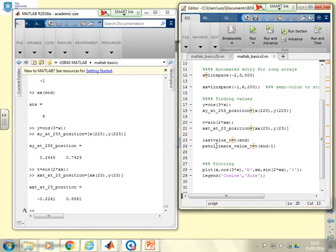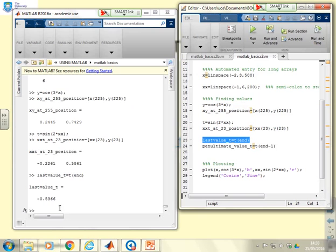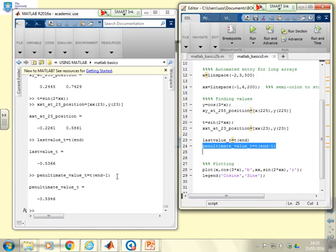If you want to get the last value you can do things like this. Last value of t is t end and there you can see it's minus .5366. If I want the penultimate value, I can use end minus one. So that's quite nice. That end is quite useful. MATLAB automatically works out what the last index is and end minus one would therefore be the penultimate index.